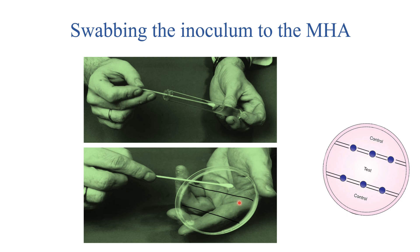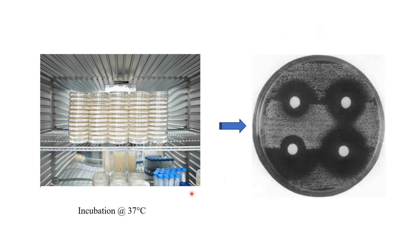The test organism is lawn cultured into the center part of the Muller-Hinton agar. After lawn culture, we will incubate the culture plate at 37 degrees Celsius for 16 to 18 hours for overnight incubation and later we will observe the zone of inhibition.